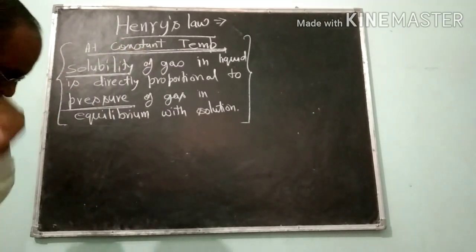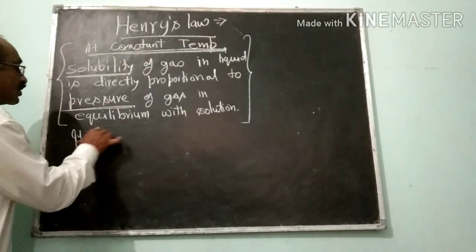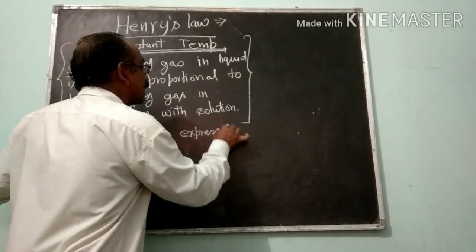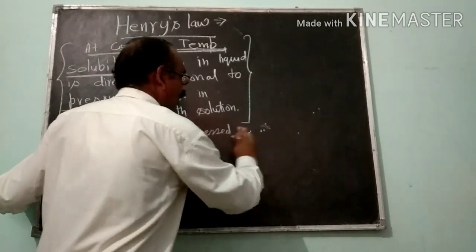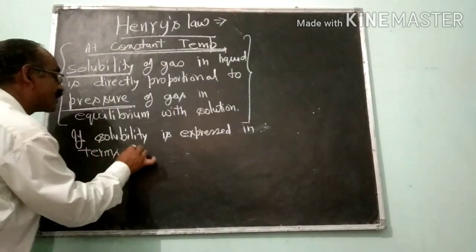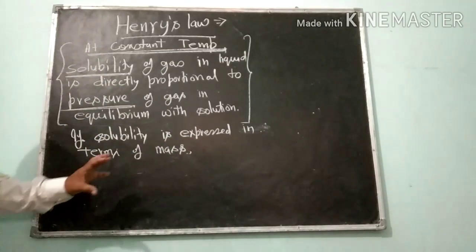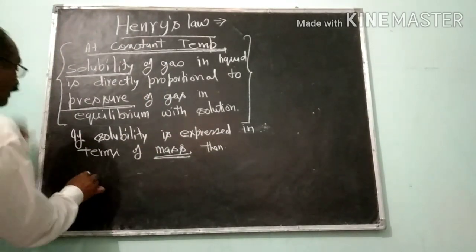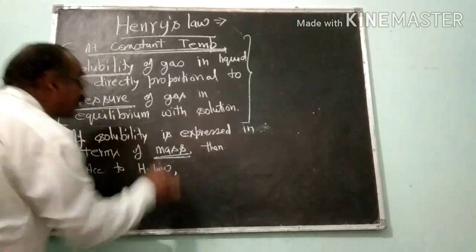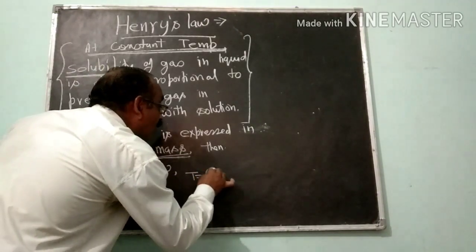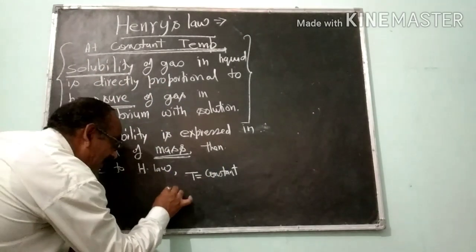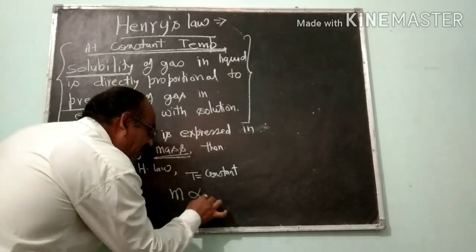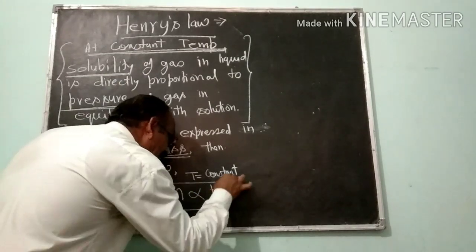If the solubility is expressed in terms of mass, then the mass of dissolved gas will be proportional to the pressure exerted by the gas at constant temperature.